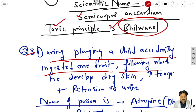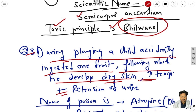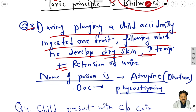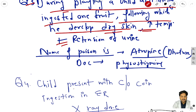Question 3: during playing, a child accidentally ingested one fruit, following which he develops dry skin, increase in temperature, and retention of urine. So the name of the poison is atropine - obviously that is Datura - and the drug of choice is physostigmine.